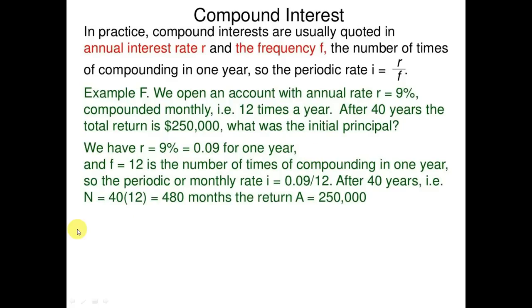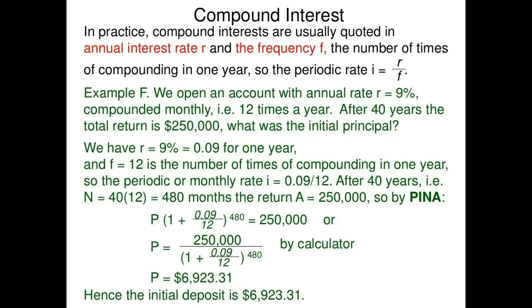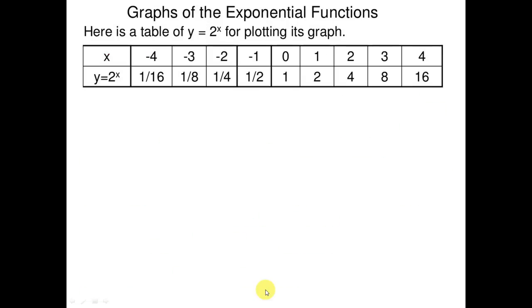n equals 40 times 12, that is 480 months. By the PINA formula, the return A is approximately 692,313.31, hence the initial deposit grows to 692,313.31.